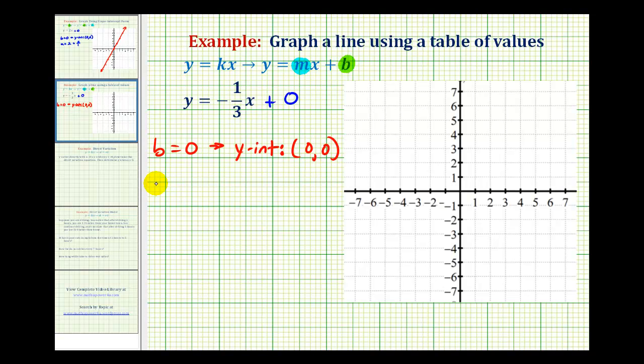And then the slope of this line, m, is equal to negative 1/3. And when I write the slope of negative 1/3, I'm going to move the negative up into the numerator, so we have negative 1 over positive 3.